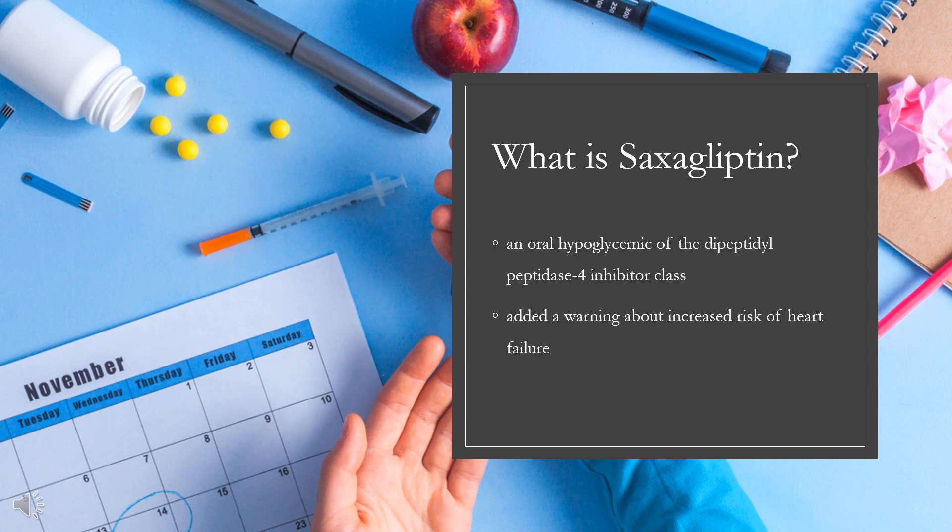In April 2016, the US FDA added a warning about increased risk of heart failure. This was based on data concluding that DPP-4 inhibition with Saxagliptin did not increase or decrease the rate of ischemic events, though the rate of hospitalization for heart failure was increased. Although Saxagliptin improves glycemic control, other approaches are necessary to reduce cardiovascular risk in patients with diabetes.